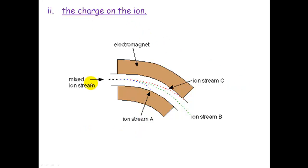The charge of the ion. So here's our mixed ion stream again. If these had different charges on them, the higher charge is deflected the most. So if we have a look, this one here is deflected the least, so it must be one plus ions.